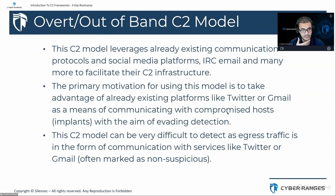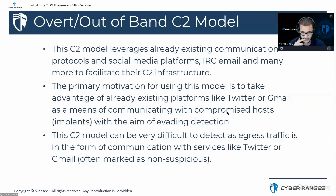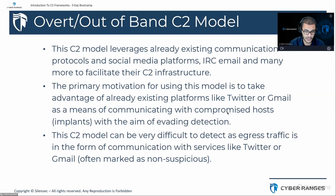The third C2 deployment model is the overt or out-of-band C2 model, which is increasing in popularity. This model leverages already existing communication protocols and platforms — social media, IRC, email, and more — to facilitate the C2 communication channels. The primary motivation is to take advantage of platforms like Twitter or Gmail as means of communicating with compromised hosts, with the aim of evading detection, since egress traffic will look like communication with legitimate services and in most cases will be marked as non-suspicious.